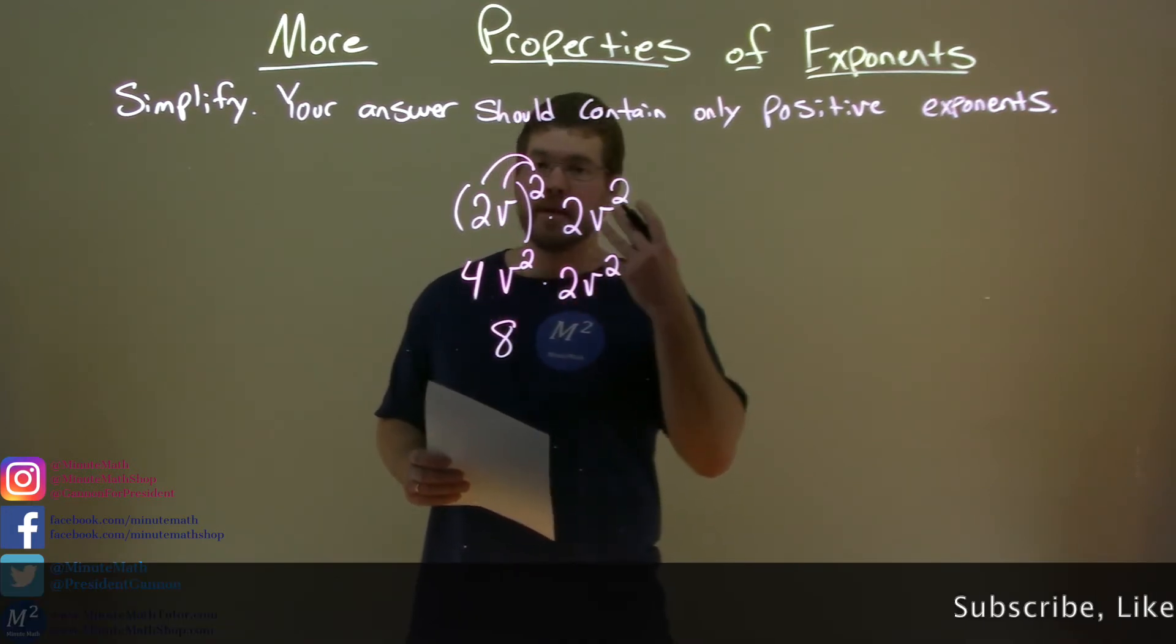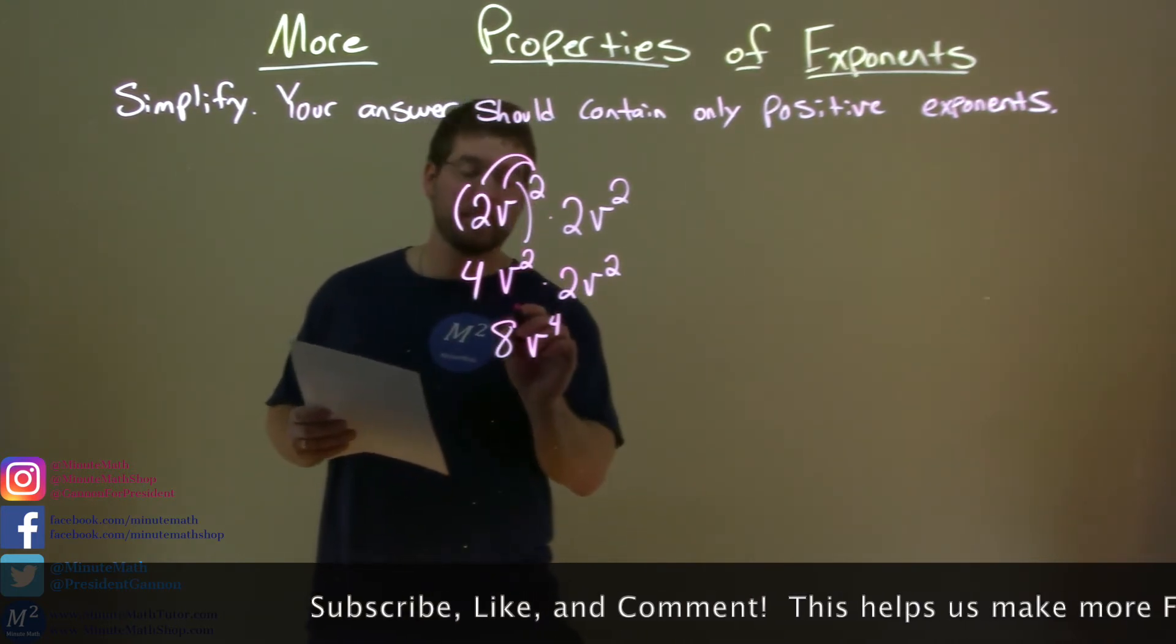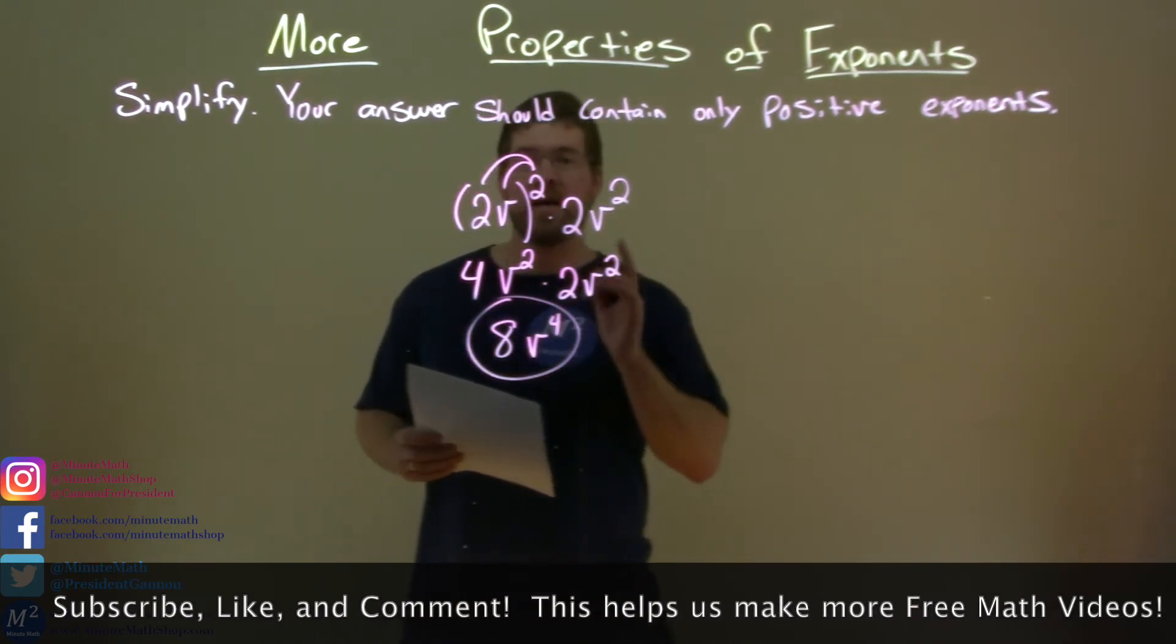2 plus 2 is 4, so we have v to the fourth power, and now we are complete. We have 8v to the fourth power.